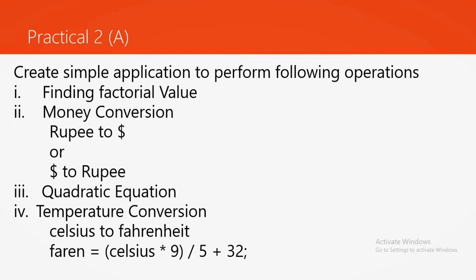This is what is expected in Practical 2A to be completed. What I will be doing is creating a class, and in that class I will be creating functions: one function for finding the factorial value, a second function for money conversion, a third function for the quadratic equation, and a fourth one for temperature conversion. Then I will be creating an object of the class and calling the methods as per the user's choice. Either you can write separate programs for each option or create a single application with a class, a set of functions, and a switch case.